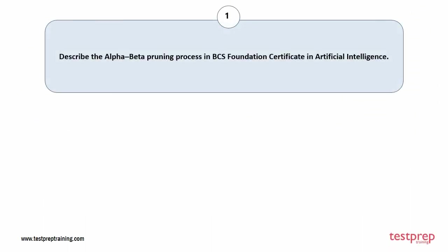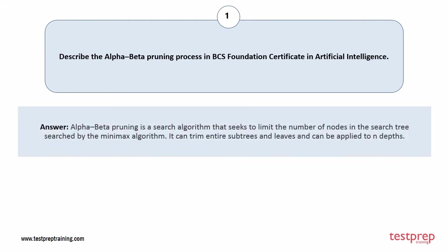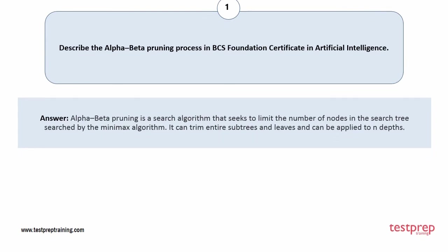Question number one: describe the alpha-beta pruning process. Alpha-beta pruning is a search algorithm that seeks to limit the number of nodes in the search tree searched by the minimax algorithm. It can trim entire sub-trees and leaves, and can be applied to any depth.